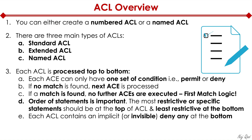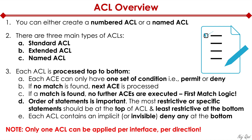Each ACL contains an implicit, or invisible, deny any at the bottom of the list — and this is a big gotcha. Also, only one ACL can be applied per interface per direction. That means an interface can have an inbound ACL and an outbound ACL, but they must be different. You cannot have two different inbound access lists on a single interface, or two different outbound access lists. You can only have a single ACL applied to an interface in each direction.